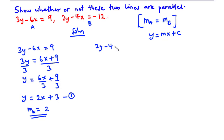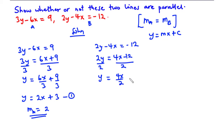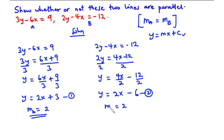Now let's solve the second equation. We have 2y minus 4x equals negative 12. We transpose negative 4x to the right-hand side: 2y equals 4x minus 12, then divide through by 2. So we have y equals 2x minus 6. Comparing this equation, we have m equals 2, so mB equals 2. Since the gradient of line A is the same as the gradient of line B, it follows that these two lines are parallel.